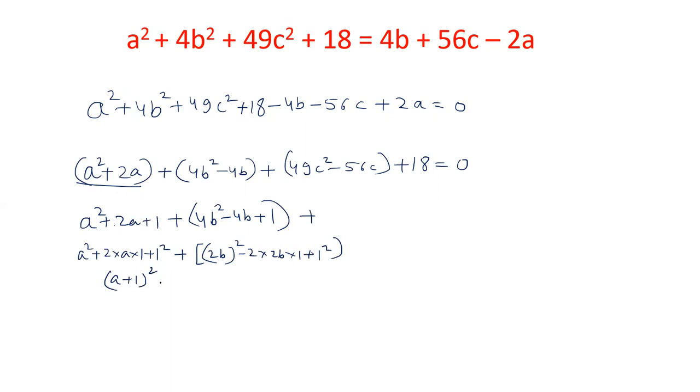And this third term can be converted to perfect square by adding 16. Now why 16? We have converted to perfect square by adding 16 because 49c² can be written as (7c)², and this can be written as 2 × 7c × 4. 2 sevens are 14, 4s are 56. So we need 4² here. So we have added 16.